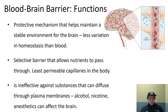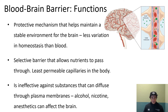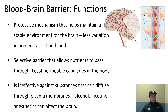The blood-brain barrier is a protective mechanism that helps maintain a stable environment, because we don't want big changes in homeostasis around the brain. It's a selective barrier that allows nutrients to pass through, but the capillaries are less permeable than in the rest of the body, regulating what substances get in and out.